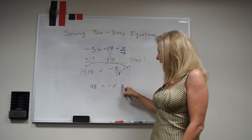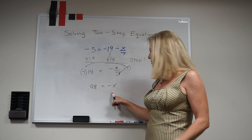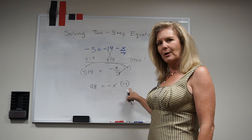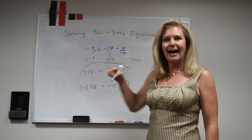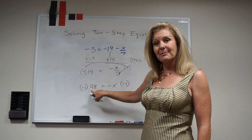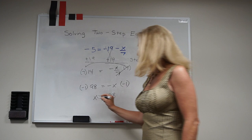I want to know what x is, and so in order to know what x is, I'm going to multiply by negative 1. But whatever I do on one side, I'm going to do on the other. Because by multiplying a negative times a negative, I get a positive, so I'm left with my positive x. And now I do a negative times a positive, I'm left with a negative 98. So in the end, I know that x equals negative 98. Now it's your turn.